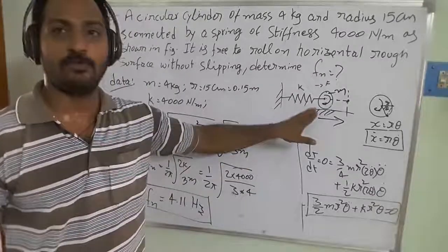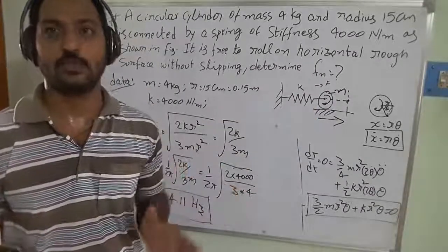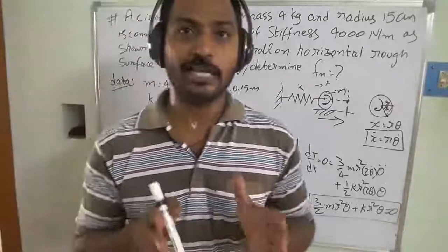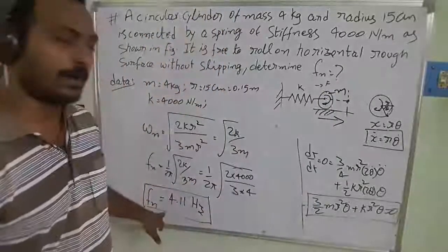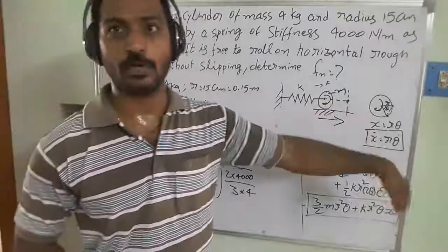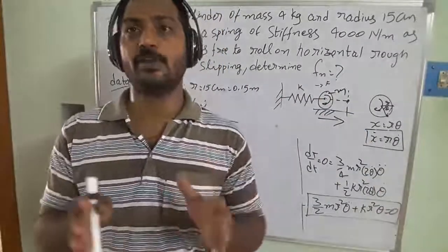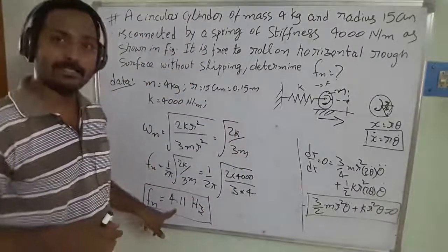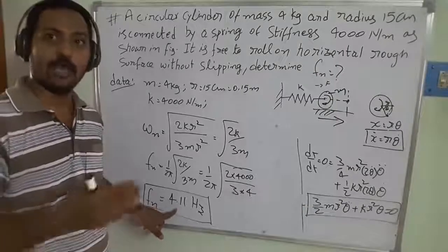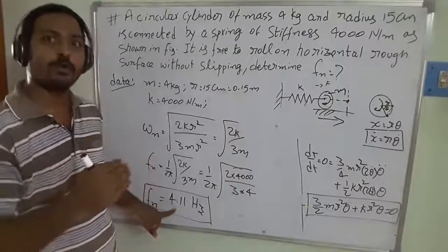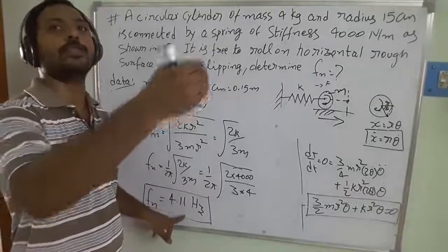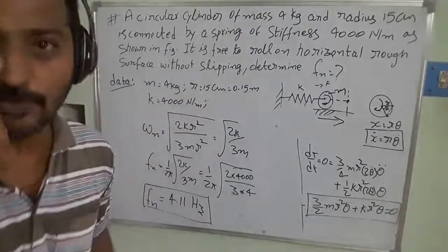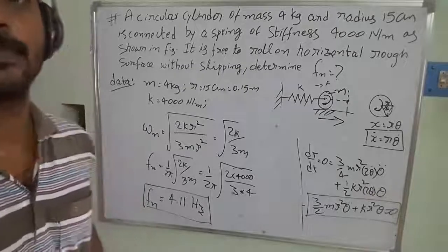This natural frequency of the system should not match the forcing frequency, otherwise resonance will occur and the system will fail. Therefore, the external excitation frequency must be either less than or greater than 4.11 Hz. The system should not be run at this natural frequency — operate either below 4 or above 4.2 Hz so that the system is sustained for a long time and its lifetime is much better.